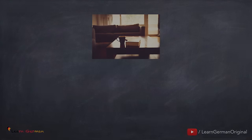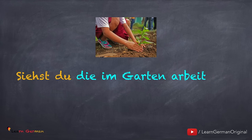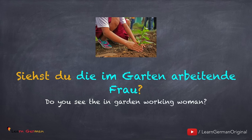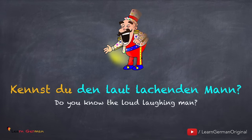Manchmal kann man die Information von zwei Sätzen in einen Satz packen. Auch bei Relativsätzen kann man Partizip 1 benutzen. Siehst du die Frau, die im Garten arbeitet? → Siehst du die im Garten arbeitende Frau? Hier bleibt die ganze Information erhalten. Nur das Verb wird als Partizip benutzt, aber mit der richtigen Endung. Hier ist noch ein Beispiel: Kennst du den Mann, der laut lacht? → Kennst du den laut lachenden Mann? With the help of Partizip 1, you can also bring two sentences together or two Relativsätze together.